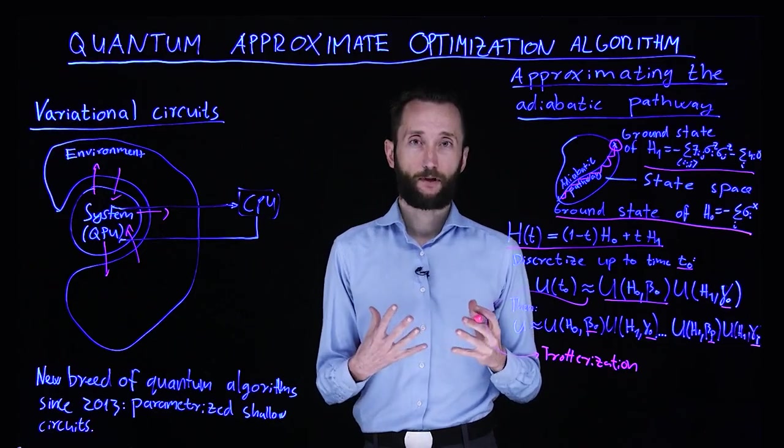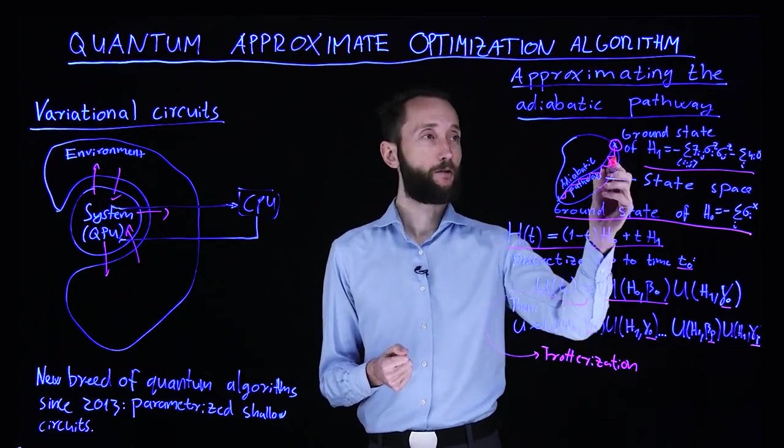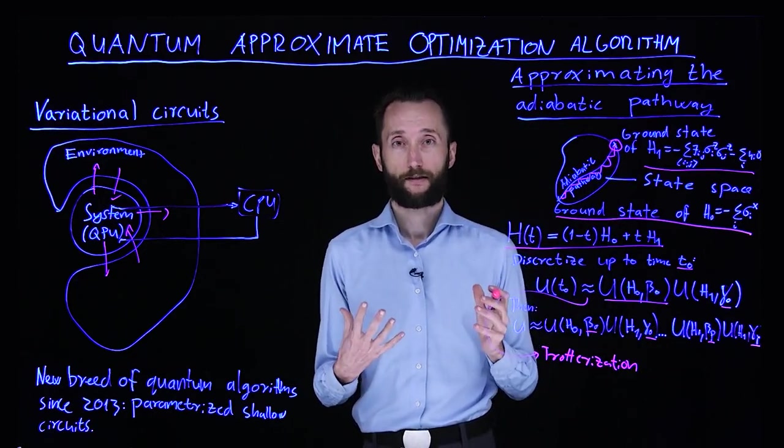This way, you can formulate an optimization problem over these parameters and do, say, a gradient descent to find the ground state of your target system.